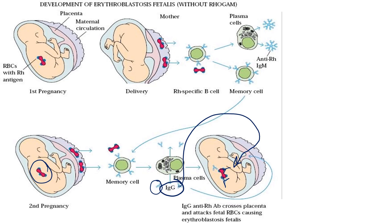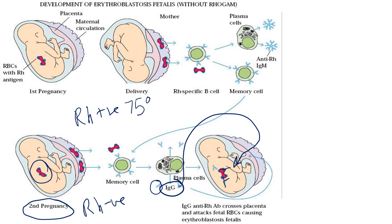Thus in this condition, during the second pregnancy the mother can only give birth to a live child if the child is RH negative. If the child is RH positive, the child will die. There is a 75% chance the child will die during the second pregnancy and only a 25% chance the mother will deliver a living child.